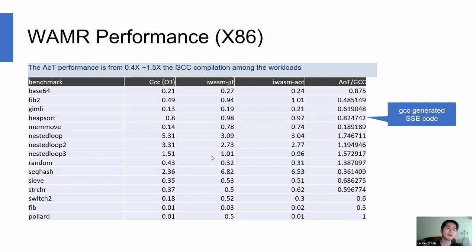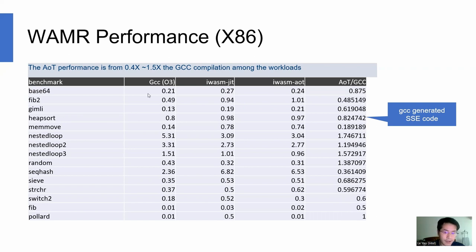Here we give WAMR performance numbers. We tested on the x86 platform architecture and compared with the native GCC compiler. The ahead-of-time performance is from 0.4 to 1.5 of the GCC compilation among the workloads. This is the benchmark result.